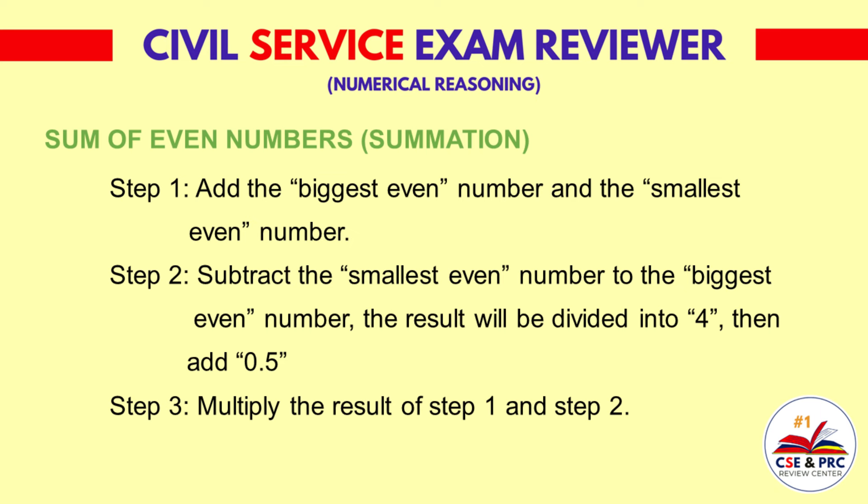Add the biggest even number and the smallest even number. Step 2: Subtract the smallest even number from the biggest even number. The result will be divided by 4, then add 0.5.